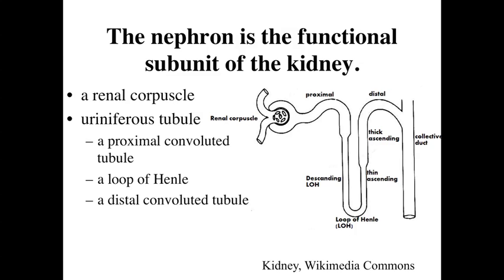Proximal and distal are in relationship to how close or how distant they are from the renal corpuscle - the start of this mechanism. The proximal convoluted tubules are the convoluted or twisted tubules relatively close to the start. Materials drain into the loop of Henle - the descending loop and then the ascending loop - and then go back into a distal convoluted tubule.